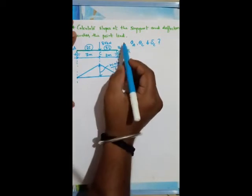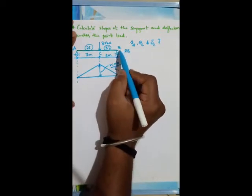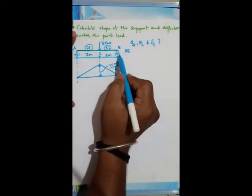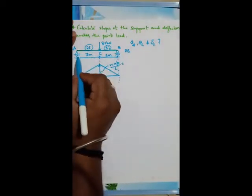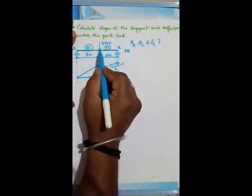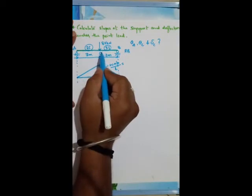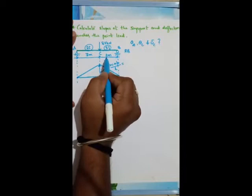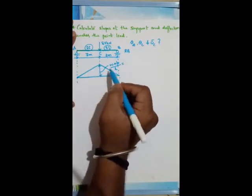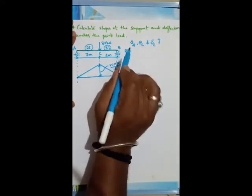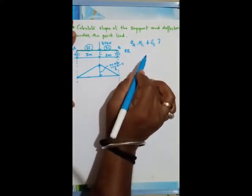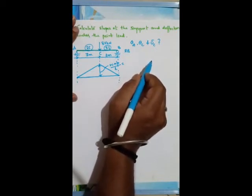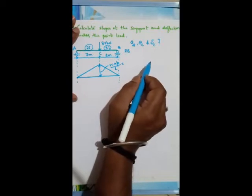How will you calculate Ra and Rb? Using equilibrium conditions. Either take moment about B equal to 0 to get Ra, then apply sigma Fy = 0 to get Rb. Once you get Ra and Rb, taking moment at C gives: Ra × 3 meters, or from right hand side, Rb × 2 meters — that is the moment at C. The moment at A and moment at B will be zero for simple/roller/hinge supports.